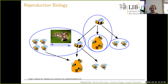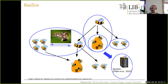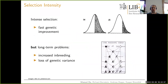Using this foundation, I wrote a computer program called BeeSim for stochastic simulation of honeybee breeding, published in 2019. The goal was to find sustainable breeding strategies for honeybees. In breeding, one wants intense selection for fast genetic improvement, but selecting too sharply leads to long-term problems: increased inbreeding and loss of genetic variants. An optimum must be found between selection intensity and managing inbreeding and genetic diversity.